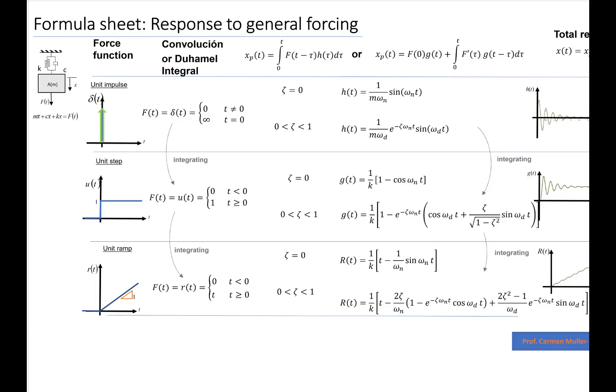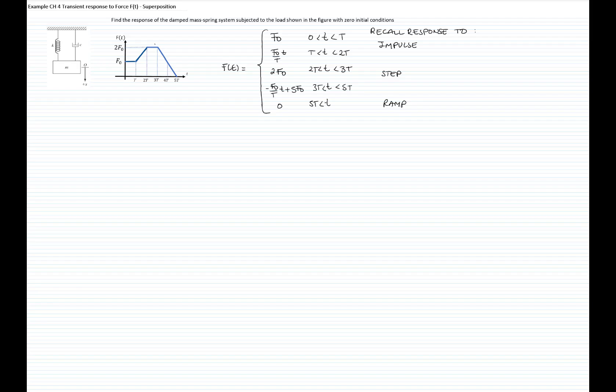So this is the formula sheet that we covered in the theory. For impulse, this will be the response. For a unit step, this will be the response. And for a unit ramp, this will be the response for a damped system. So let me copy those formulas.